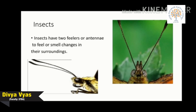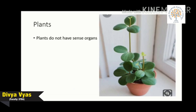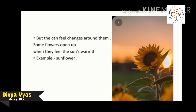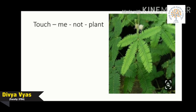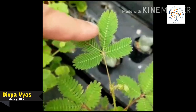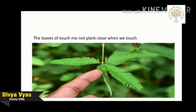Plants do not have sense organs, but they can feel changes around them. Some flowers open up when they feel the sun's warmth — for example, the sunflower. Another example is the touch-me-not plant, whose leaves close when we touch them.